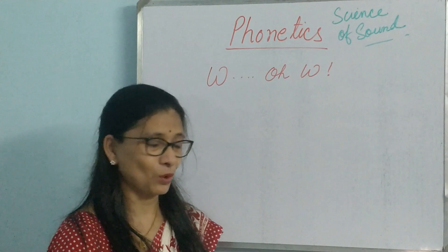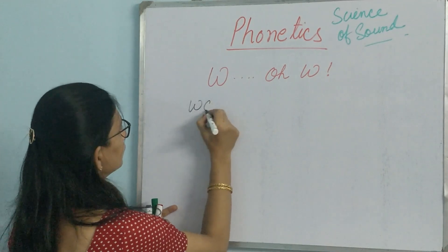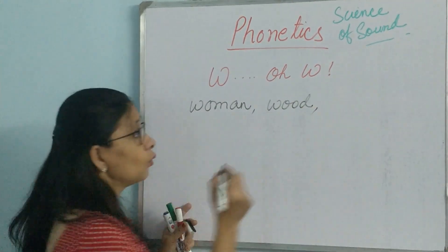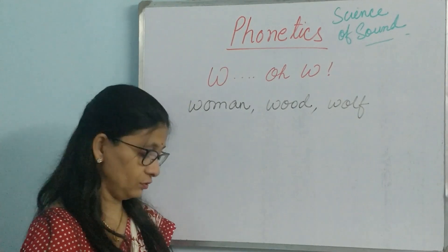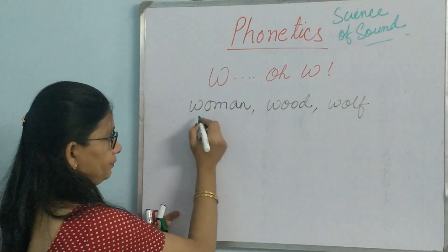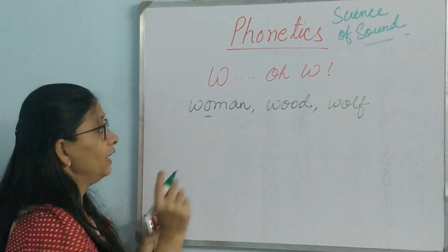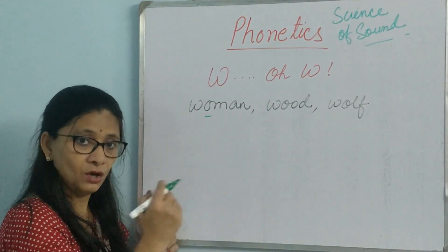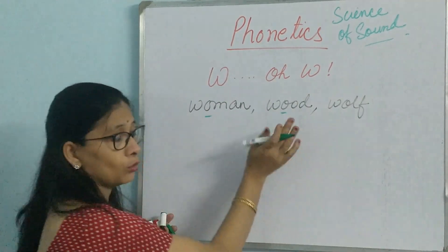Let us take some words — say 'woman', 'would'. Let us try to understand what mistakes are made. With 'woman', since they do not know the pronunciation of W very well, they try to concentrate on 'o', and thus this word becomes 'oh man' — which is totally wrong. It is not 'oh man', it is 'woman'. Similarly, 'what' becomes 'od' because they ignore the W and the pronunciation begins from the O.